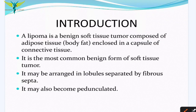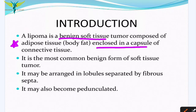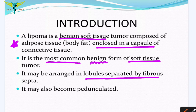In this video, let's learn about lipomas. A lipoma is a benign soft tissue tumor composed of adipose tissue. It is enclosed in a capsule of connective tissue. It is the most common form of soft tissue tumor and is benign. It may be arranged in lobules separated by fibrous septa.